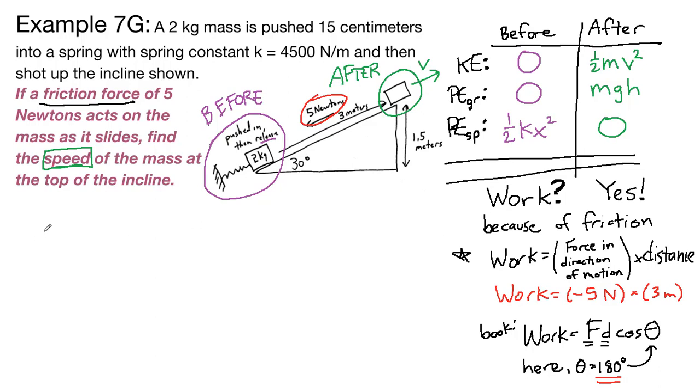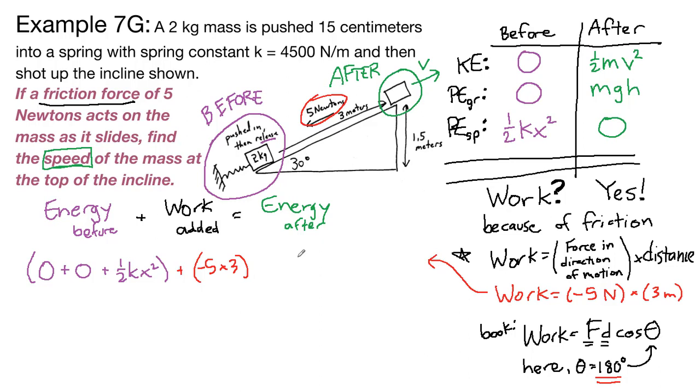So now we go back to our standard process of writing energy before plus work added equals energy after. And I'll continue to say this, but the reason that it's so useful to write it every single time is to really train our brains that that's part of the process and that is the standard starting point. In the same way that we really should have been training ourselves to write F net equals MA in every single chapter 4 and chapter 5 problem. Then we plug in all of the terms that we have, one-half kx squared. The work added term, I'm now going to put in what we've already done so far. So negative five times three. And then we have the energy after, one-half mv squared plus mgh plus zero.